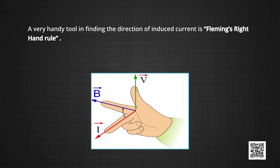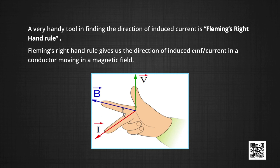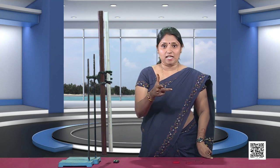We still do not know in which direction the current will be induced. A very handy tool for finding the direction of the induced current is Fleming's right-hand rule. Fleming's right-hand rule gives us the direction of induced EMF in a conductor moving in a magnetic field. If we stretch the forefinger, central finger, and thumb of the right hand mutually perpendicular to each other such that the forefinger points in the direction of the field and the thumb in the direction of motion of the conductor, then the central finger gives the direction of the induced current.